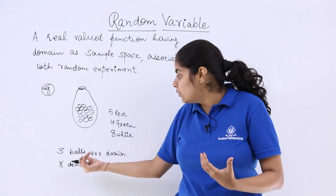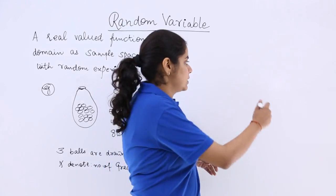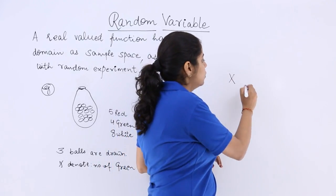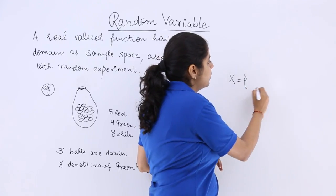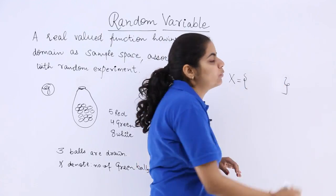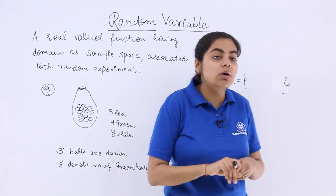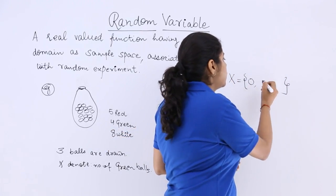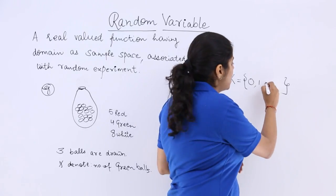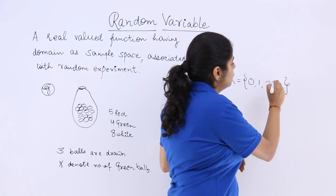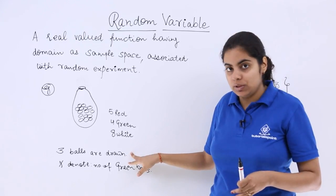That means if you have to take out the balls, how many balls can be taken? If x denotes the random variable then x has some particular range. And that particular range is how many green balls can you take out? Probably 0 or 1 or 2 or 3 because at max 3 balls are taken out.